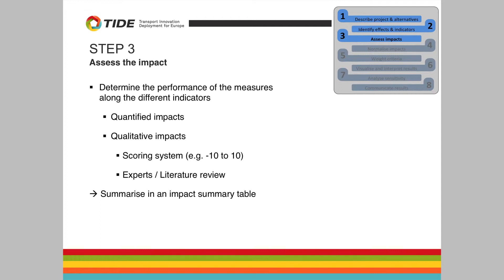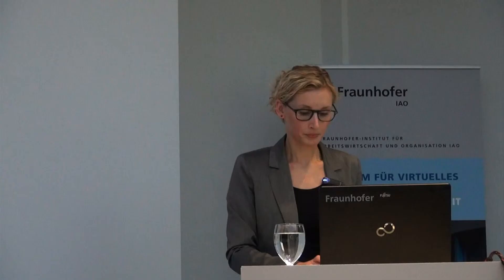To assess the qualitative impacts, we decided to go for a scoring system — for instance, on a scale between minus 10 for negative effects and plus 10 for positive effects. You can consult experts within the municipality or external experts about the potential size of effects. You can also consult the literature and other cities that have already implemented the measure — if the measure had a strong effect in one city, it might also have a strong effect in your city.